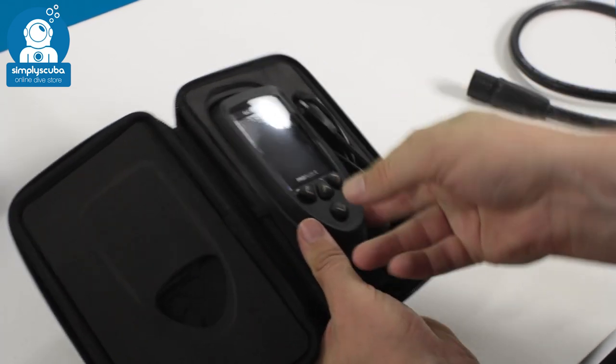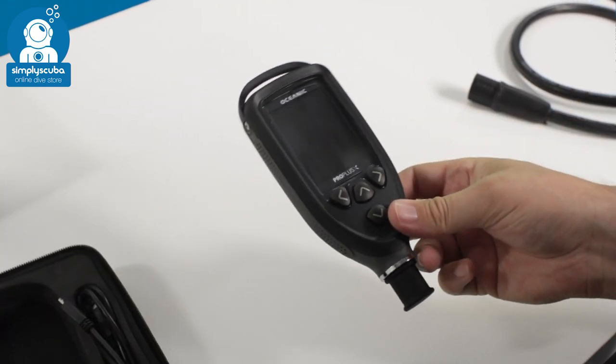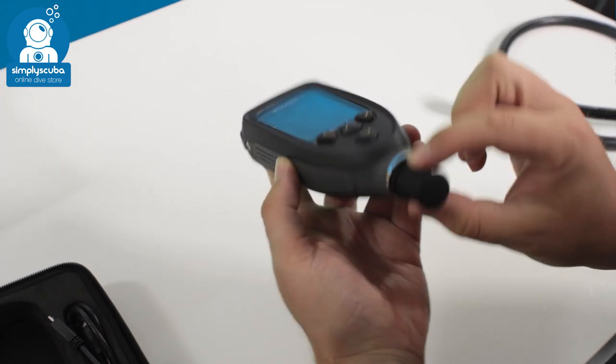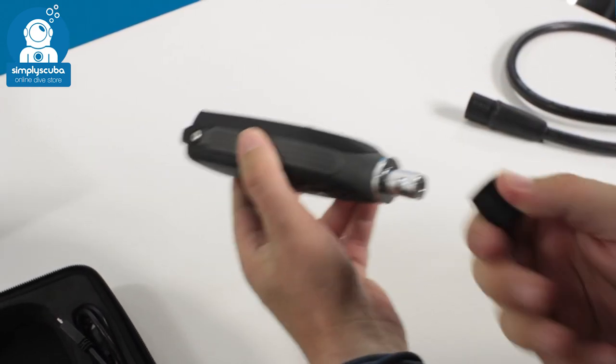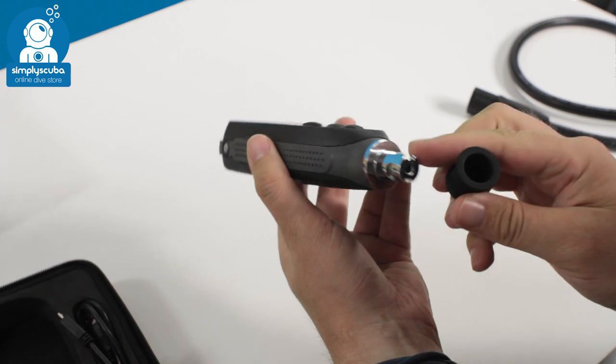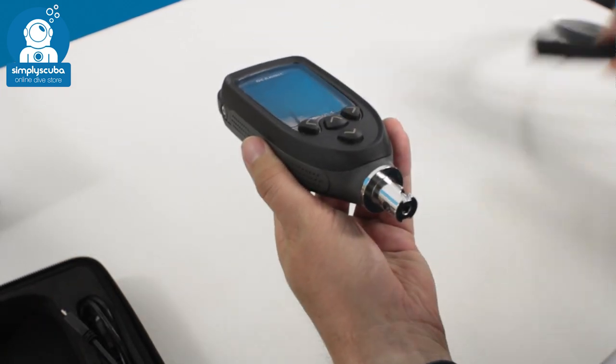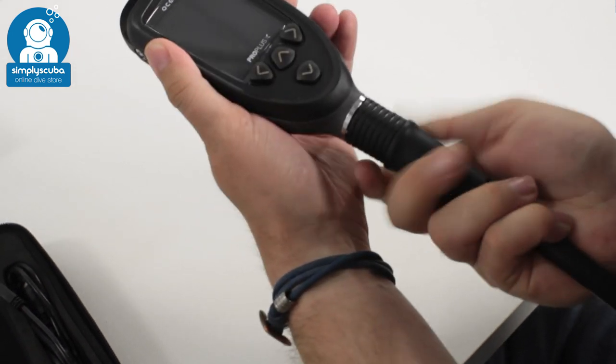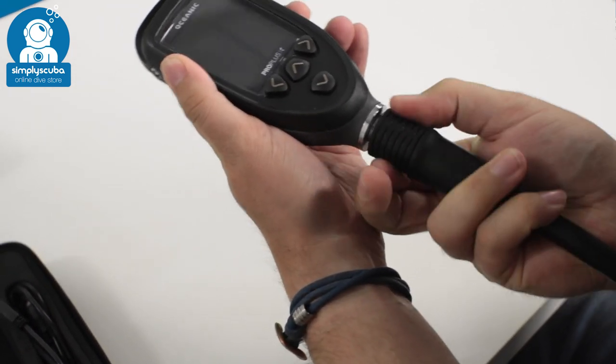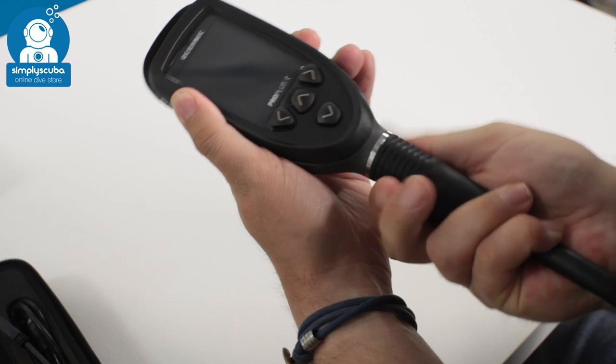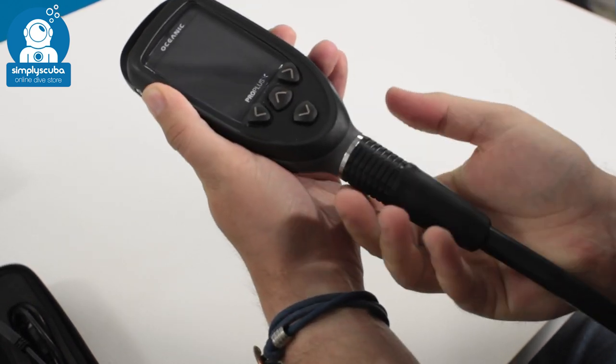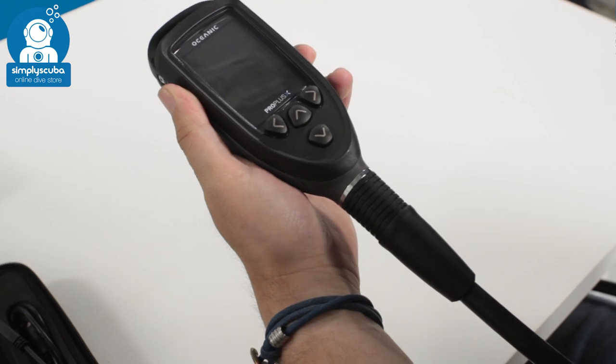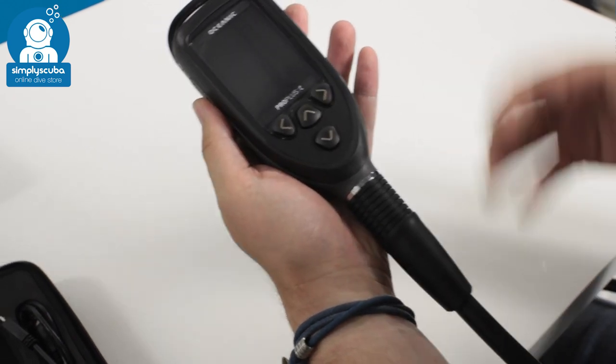So if we just get the dive computer out, I'll show you how it connects to your hose. It comes as standard with a plug on the end to protect this connection. Then connecting the hose is really quick and simple. The bayonet fitting just slips into position and then just keep turning it clockwise until it stops.